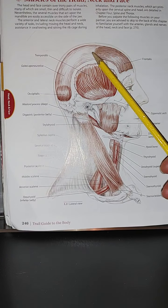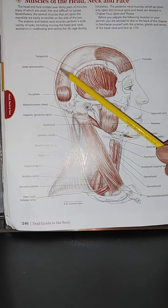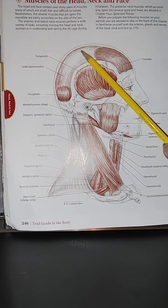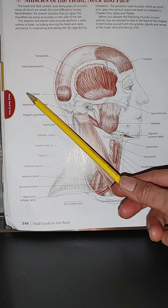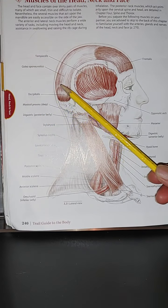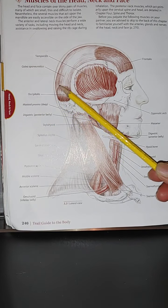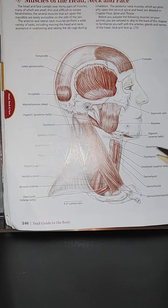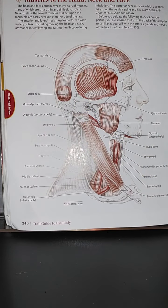We do have the galea aponeurotica. This is more so connective tissue. And we have the occipitalis here. Usually if there's a bump, you want to do a release in that muscle, in that area.